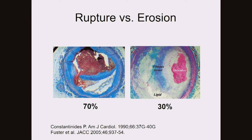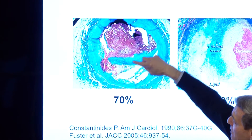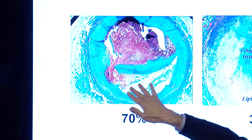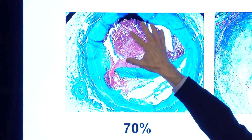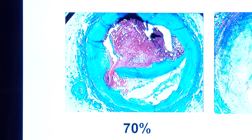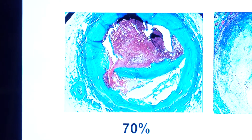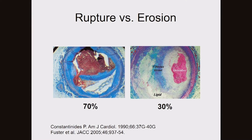Here is a picture of someone who didn't make it. This is a cross-section showing the fibrous cap that has ruptured, where the lipid core was, where the blood should be flowing — and there's a big blood clot that caused a heart attack. Rupture of plaque is responsible for the majority of heart attacks.